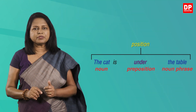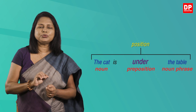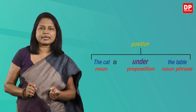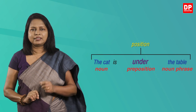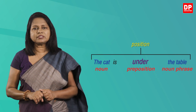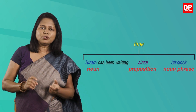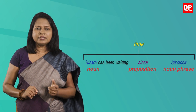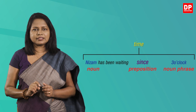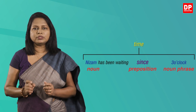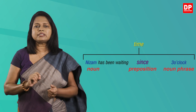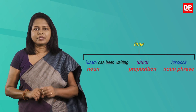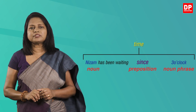Let's look at this example. The preposition 'under' is used to link the two nouns 'cat' and 'table', showing the location or the place of the cat. 'Under' is a preposition of place. Now look at this example: the preposition 'since' is used to link the noun 'Nizam' and the noun phrase 'three o'clock', showing a time relationship. 'Since' is a preposition of time.